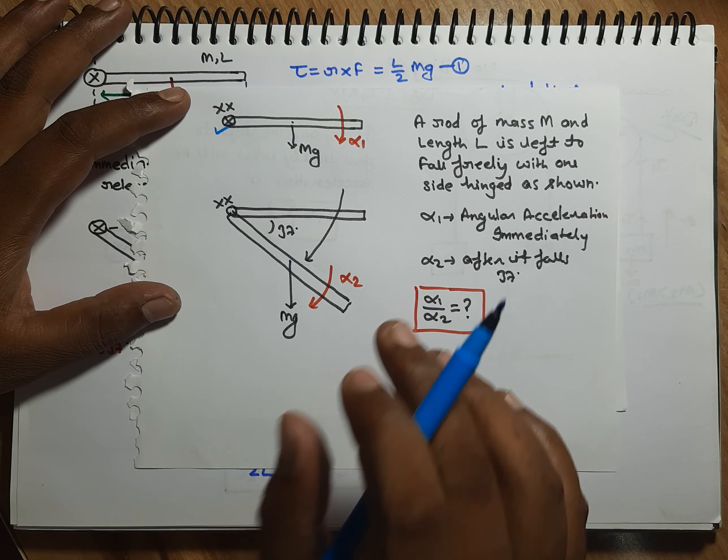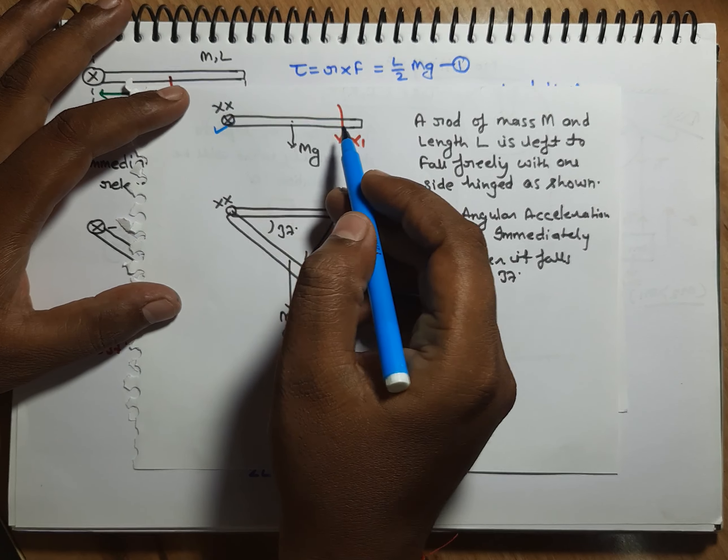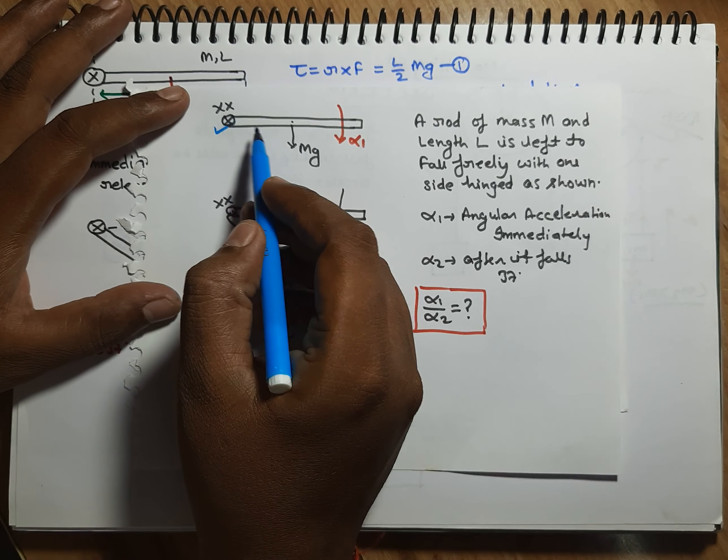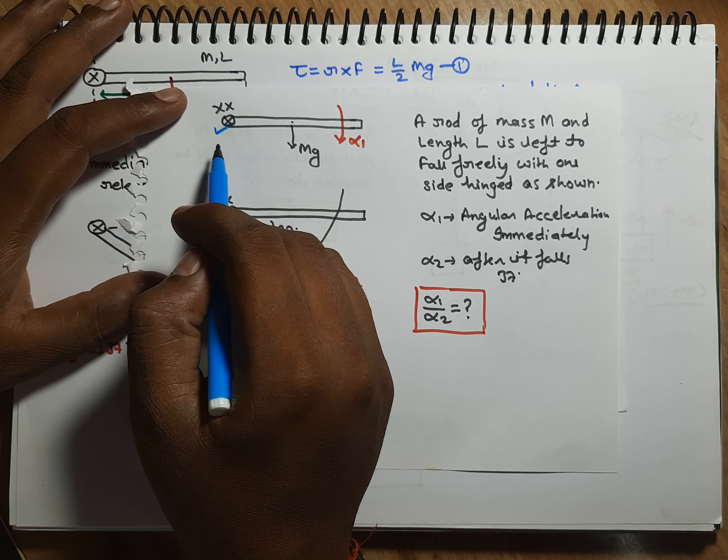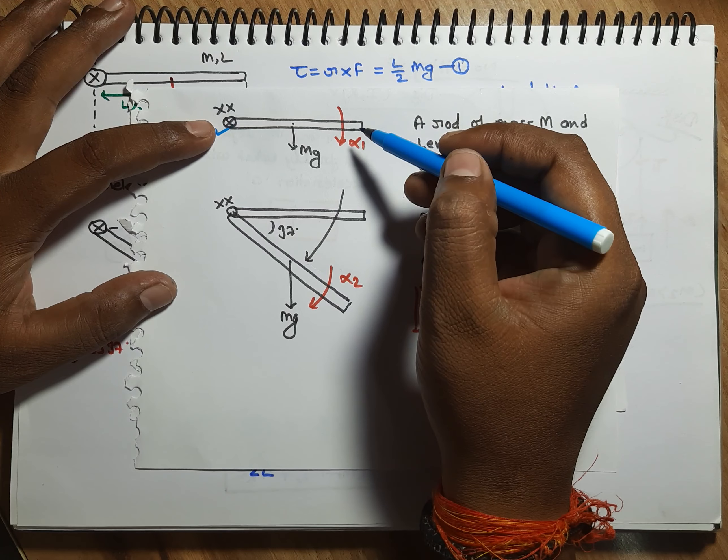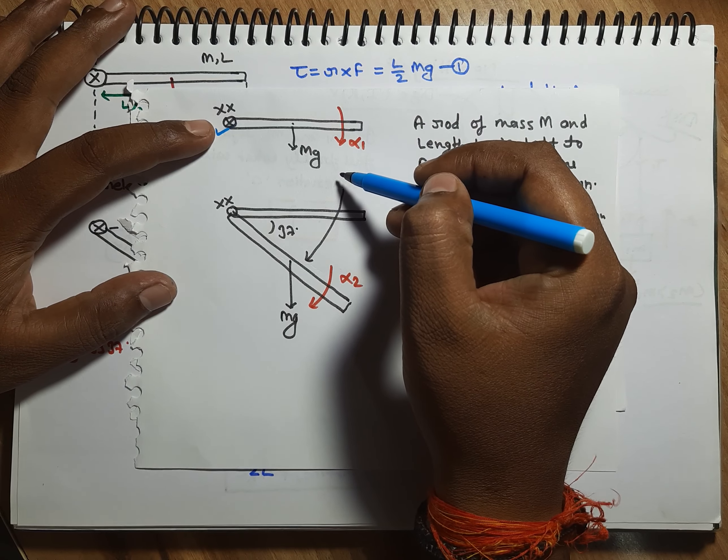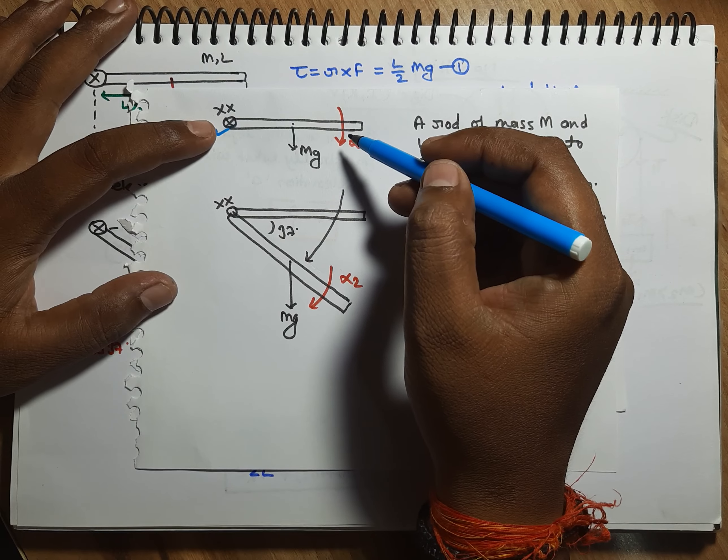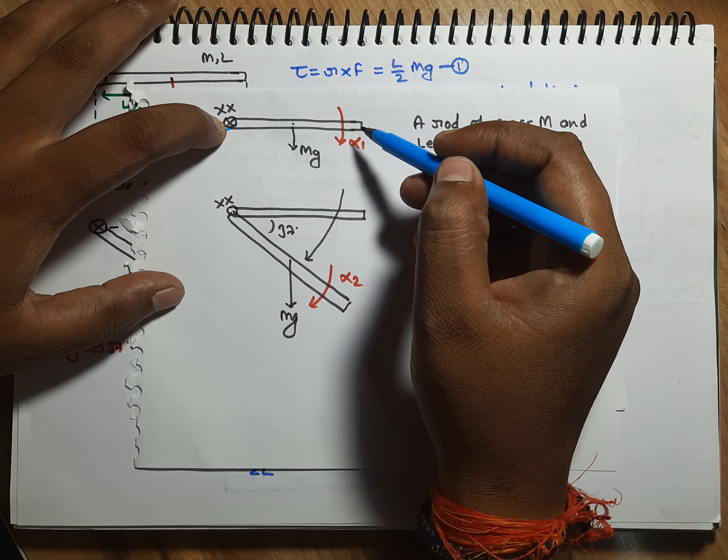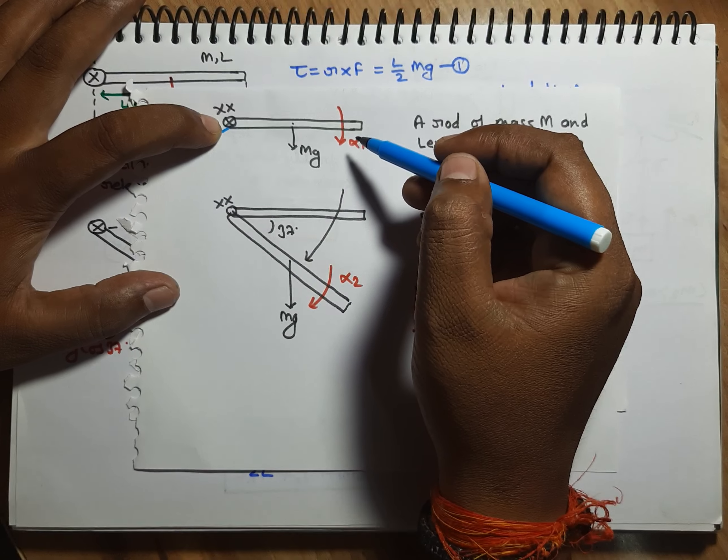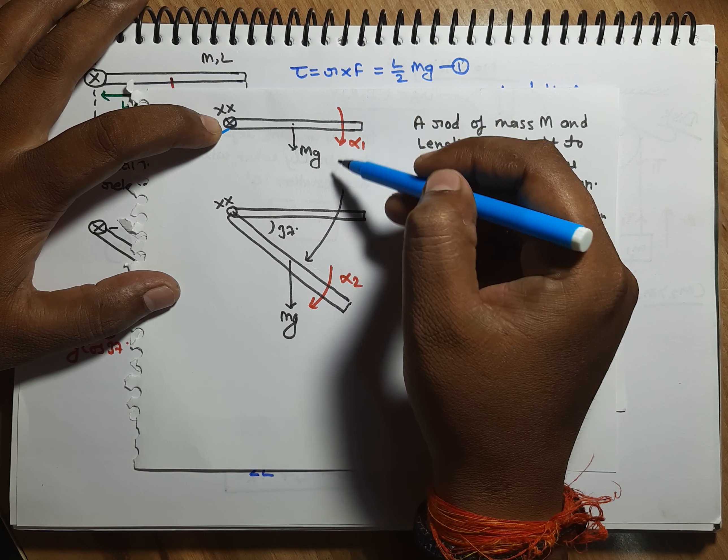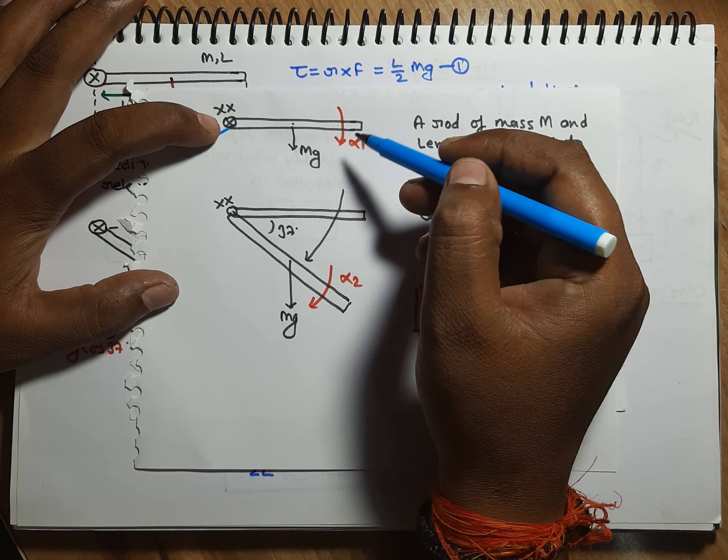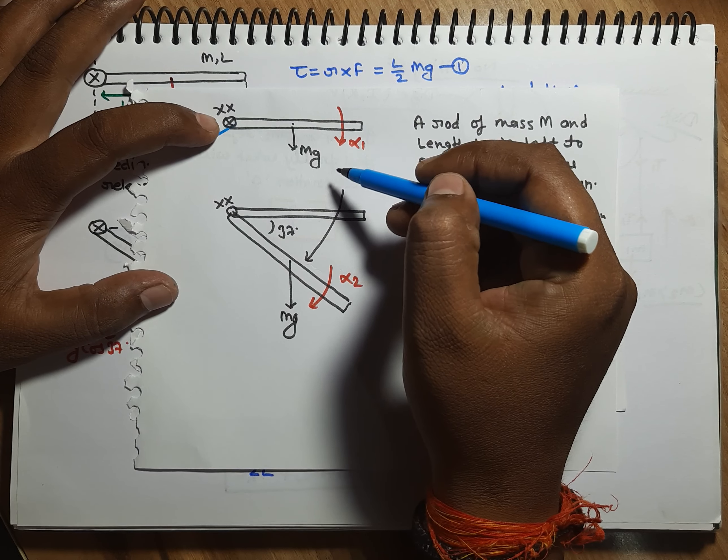Friends, we have kept a rod. The left-hand side end has been hinged, and friends, the rod is freely falling down. So friends, when this rod is hinged, then it will be circular motion, and if it will be circular motion, friends, then there will be angular acceleration.